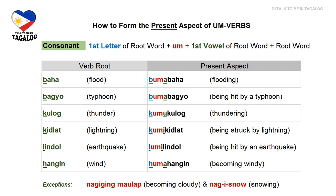Now let's study how to form the present aspect of root words that begin with a consonant. Look at the word baha, which means flood. The first letter 'b' is a consonant, so you add 'um' after it. Then look for the first vowel in the root word, which is 'a', place it after 'um', and then add the root word. So the present aspect of baha is: ba + um + a + baha = bumabaha, meaning 'flooding.'